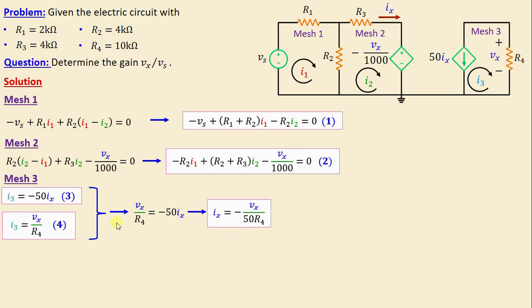That means we can write Ix in terms of Vx is equal to negative Vx over 50 R4. And if we look back in mesh 2, we can see here that I2 is equal to Ix. That means I2 is equal to negative Vx over 50 R4, and I will call this equation 5.